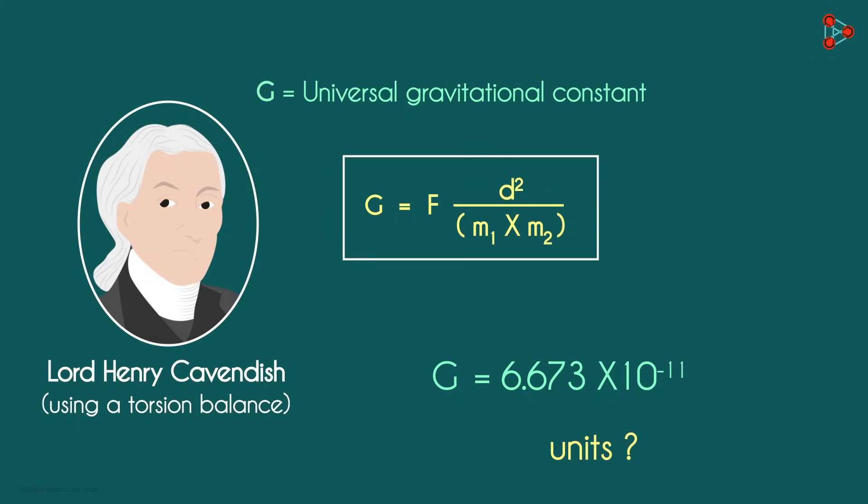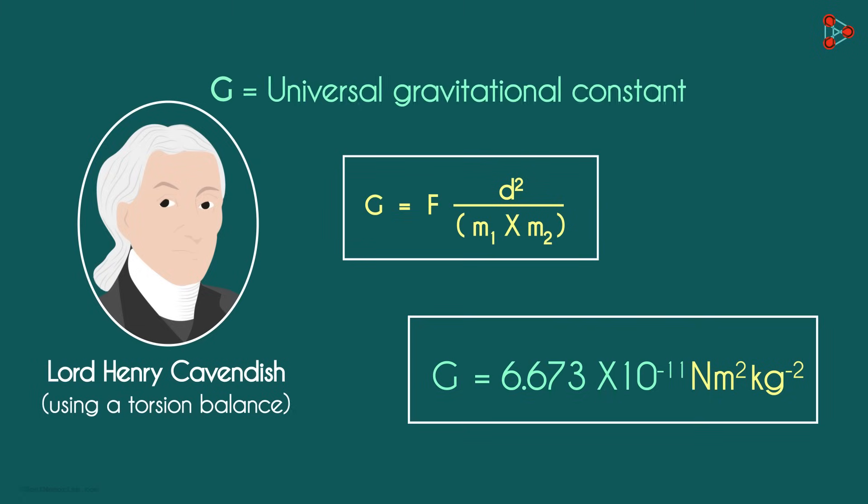What will be the units of G? Force is newtons. As the distance is in meters, we have meters squared. And as the mass is measured using kilograms, we multiply this with kilograms raised to negative 2. This is the value of the universal gravitational constant.